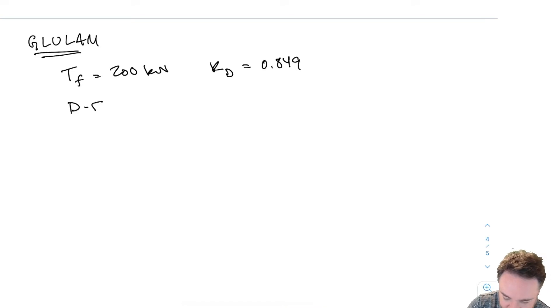We won't have to consider that affecting glulam because the gross is typically going to govern. We know that we're going to use Douglas Fir Larch 20 F EX. That was given in the design problem. Now let's go to the tables in a minute and figure out what our actual strength should be, but before we do that, let's figure out what our KH is.